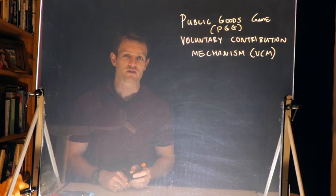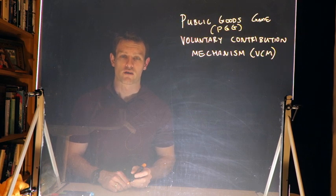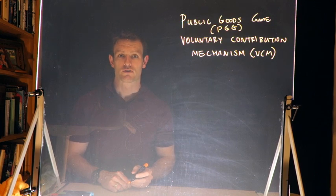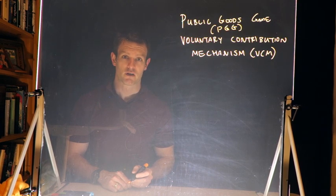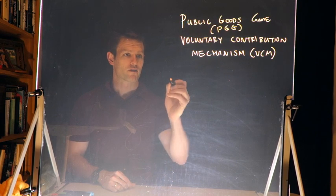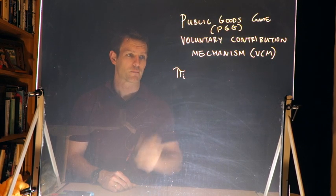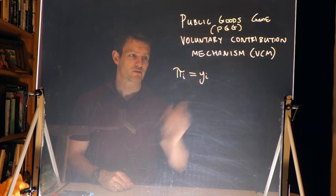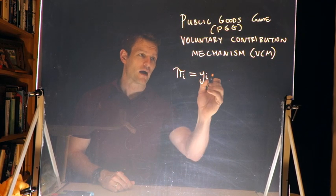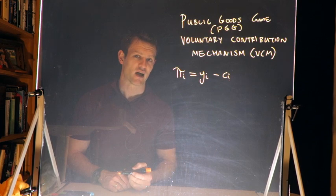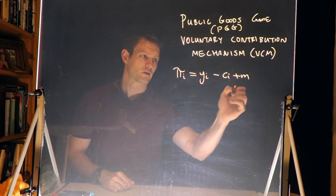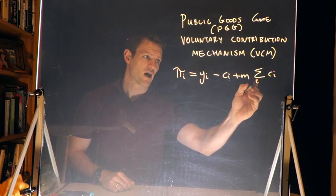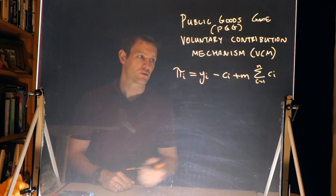When we're thinking about this, we want to think about the behavior of players in the game where they're choosing between contributing or not contributing to something which can act like a public good. So to do that, we're going to think about a payoff structure for players where they receive a payoff, which we'll label π_i, and the π_i for an individual player is going to be equal to the endowment that they receive from the experimenter, y_i, minus what they contribute to the public good, c_i, plus m, a multiplier, which is multiplied by the contributions of all players, i equals 1 through n, to the public good.